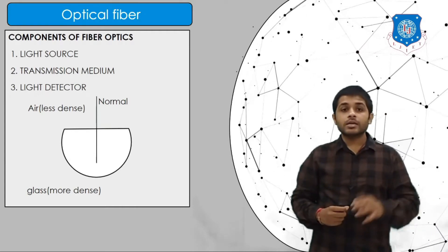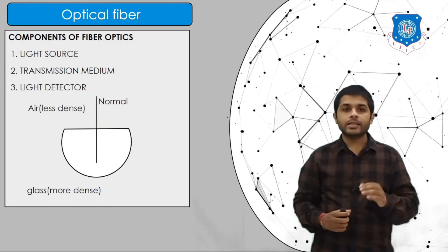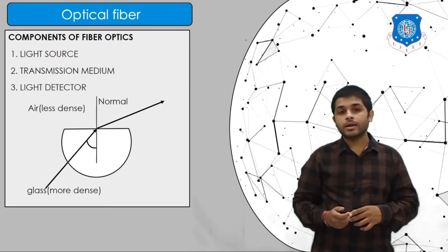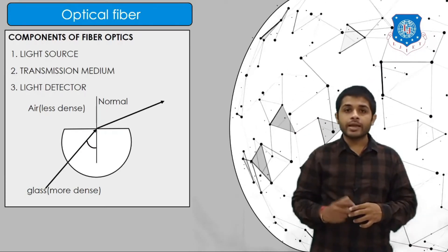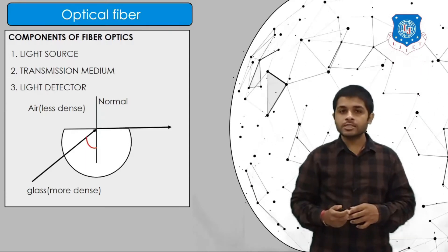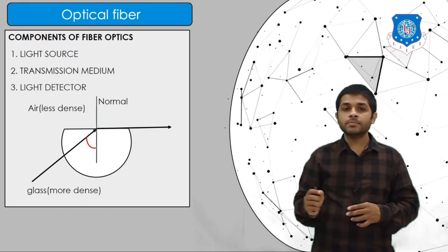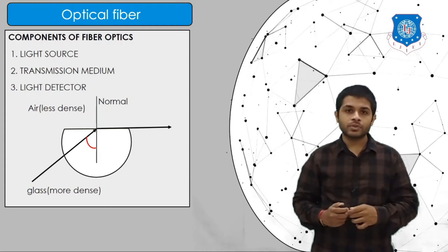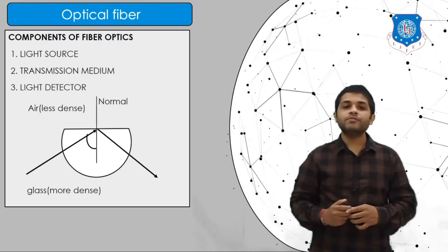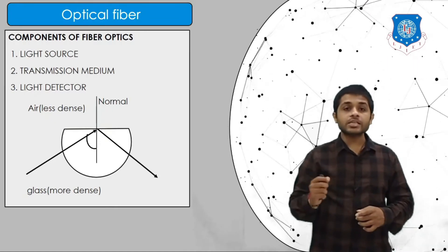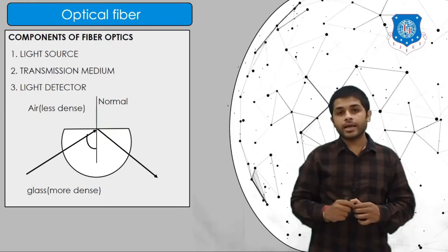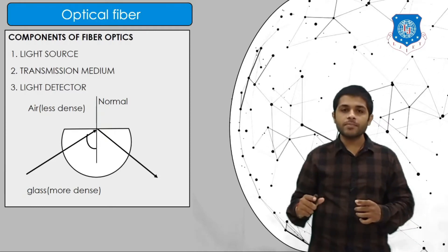The working principle of optical fiber is based on total internal reflection. The optical fiber has a dense medium (glass) on the inside and less-dense air on the outside. When light travels from the dense medium to the less-dense medium at an angle greater than the critical angle, it is reflected back inside — this is total internal reflection. Light must enter at an angle greater than the critical angle so it stays inside the fiber.